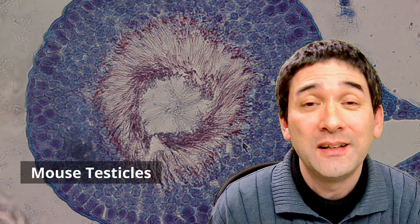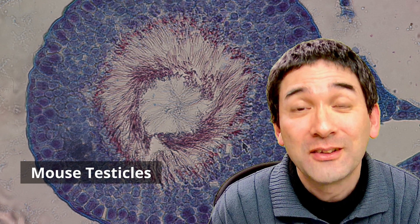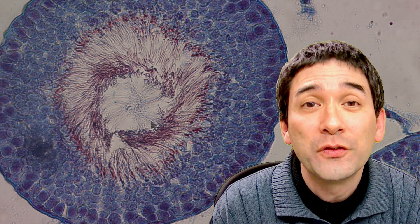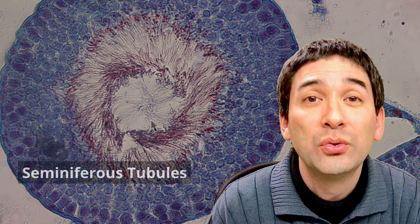Yes, we are looking here at the cross-section of the testicles of a mouse, and in a mouse testicle, just like in the testicles of all mammals, there are many of those round structures that you see here. These round structures are cross-sections of the so-called seminiferous tubules.